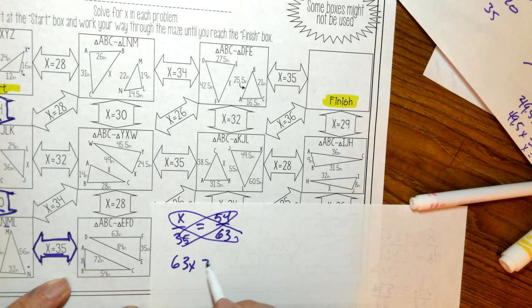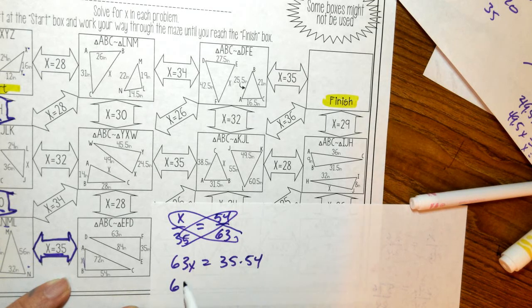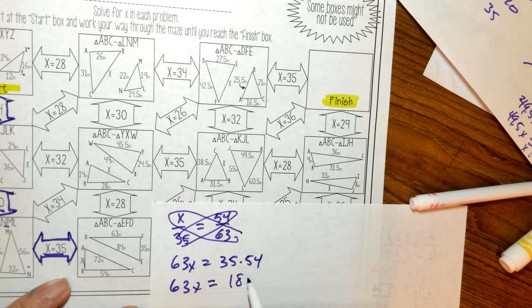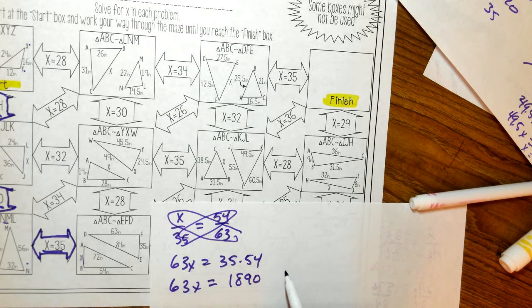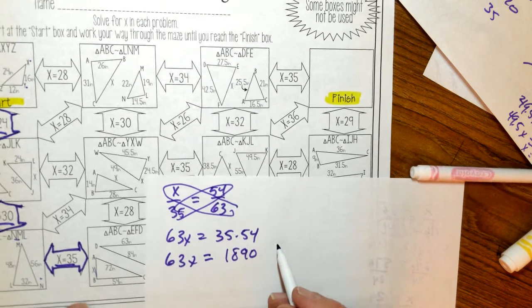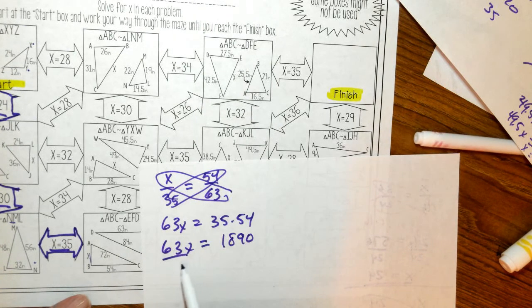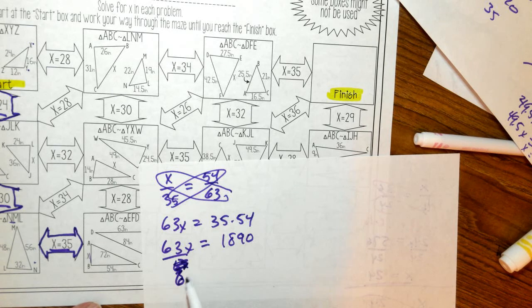So I've got 63X equals 35 times 54. And now 35 times 54 is 1890. And now I've got to divide and solve for X. So I'm going to divide by 63.